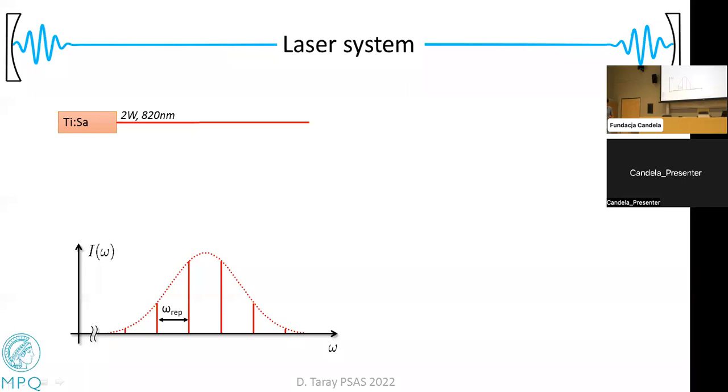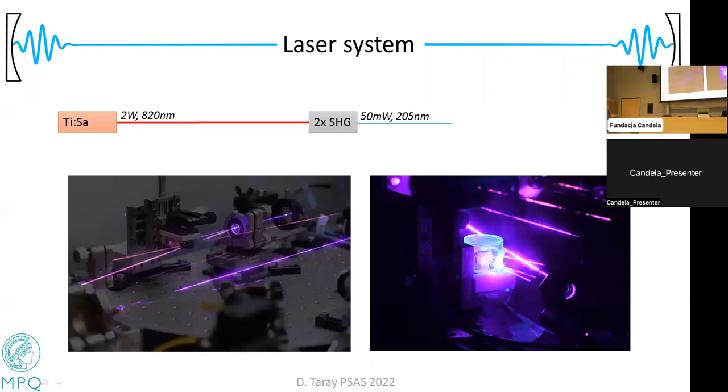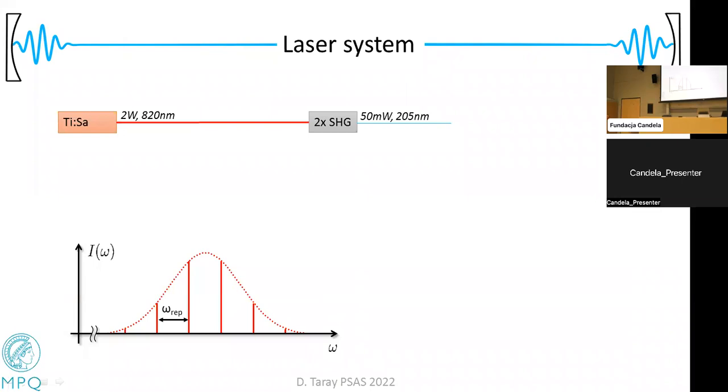Let's have a look at our experimental setup. We start out with a titanium sapphire laser at 820 nanometers, so we get two watts of mode-locked power. Here you see a sketch of the spectrum, with this broad envelope and evenly-spaced comb teeth. We do two second harmonic generations of this light to generate around 50 milliwatts of 205 nanometer power. The difference between 10 milliwatts and 50 milliwatts is the efficiency enhancement that you get by using pulsed lasers. Here you see two pictures of our crystals. We are using an LBO and BBO crystal for the second harmonic generation, and these are both placed in enhancement cavities to increase the conversion efficiency.